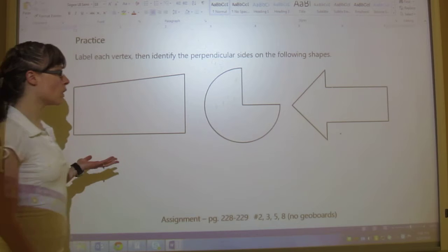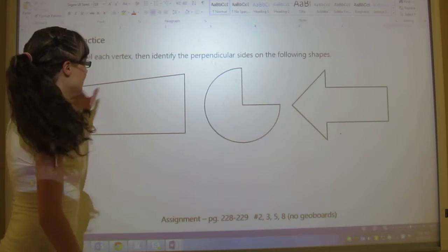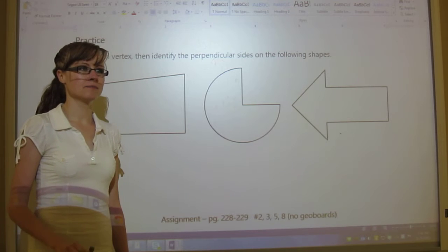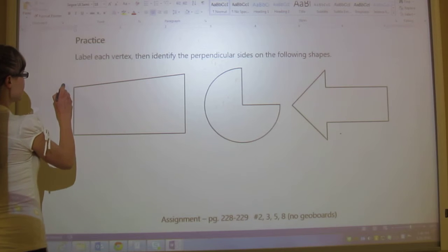This we would call a quadrilateral. We'll learn more about these later on. But it has four sides. But it doesn't have all perpendicular sides. That's why it can't be a rectangle. Anyways, so let's start.